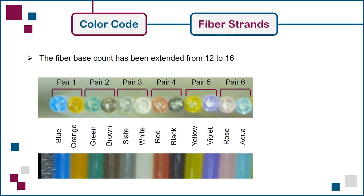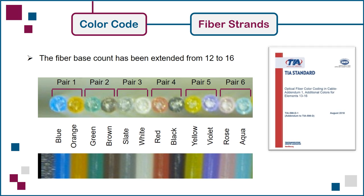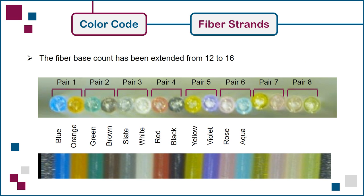More recently, the fiber base count has been extended from 12 to 16, to enable very high speed networks such as 400 and 800 gigabit ethernet. In response, the TIA has published addendum 1 to the 598-D fiber color code standard, listing four additional colors for strands 13 through 16: olive, magenta, tan, and lime.